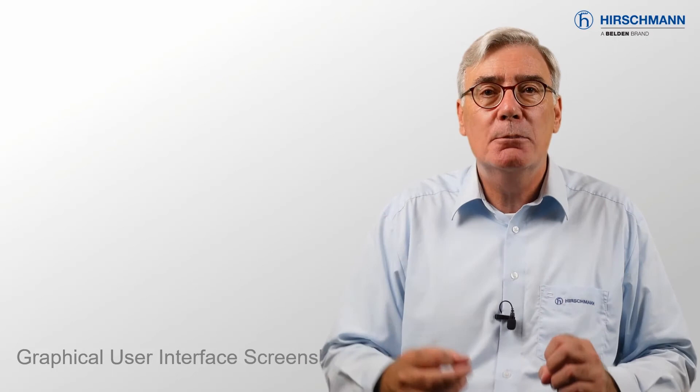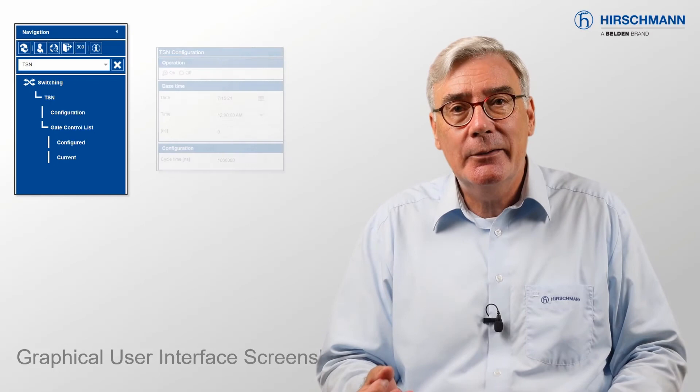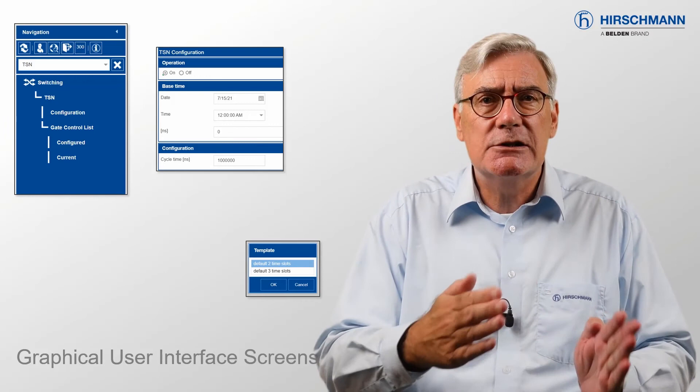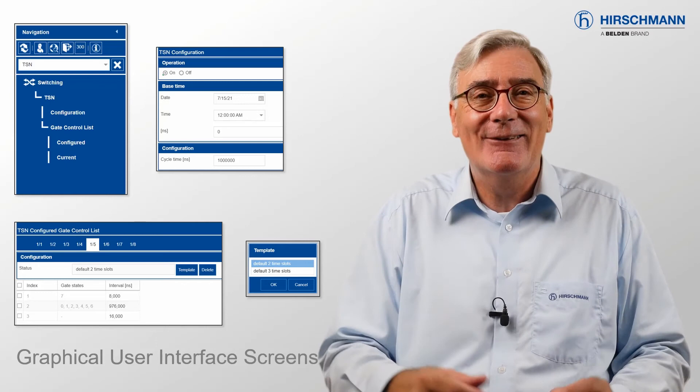Before we wrap up, I will quickly show you some example screenshots from the Bobcat graphical user interface. Clockwise from the top: the TSN navigation menu, the cycle time configuration, the two time slot templates, and the gate control lists for a single port. Just pause the video if you want to take a longer look.